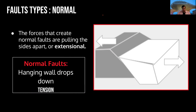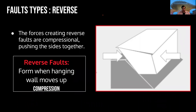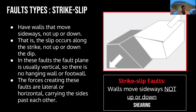We can look here at normal faults — the hanging wall drops down, creating a normal force like pulling apart. It's gravity that is acting there. We have a reverse fault when the hanging wall moves up, and it's because of compression. And we have the strike-slip when the wall moves sideways — not going up and down but to the side. We can have a combination of these.